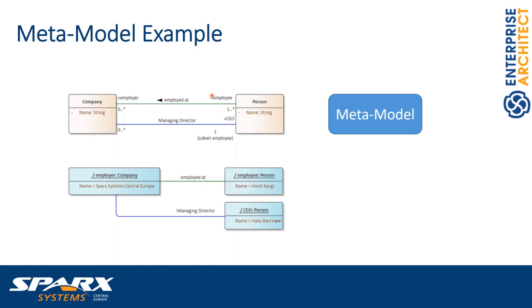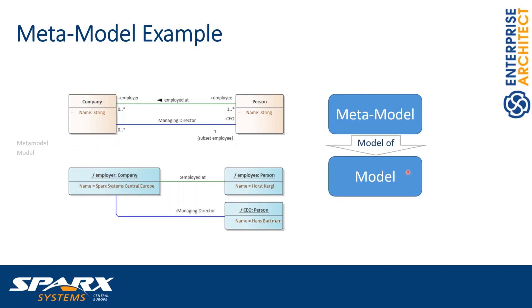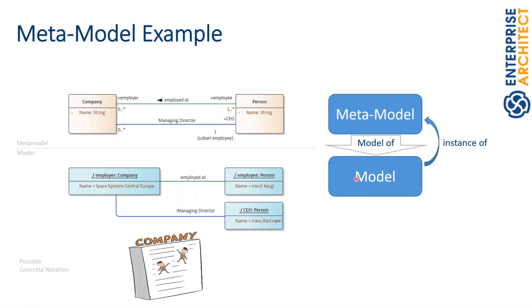If I create instances of this model, I can model companies like Sparx Systems Central Europe and persons like Horst Karge and Hans Bartmann, who is the CEO. The model on top is a model, but it is also a metamodel because the instance of this model is our model. So the metamodel is a model of a model, and the model is an instance of this metamodel. The graphical representation can look differently — it's just one possible notation for this data.